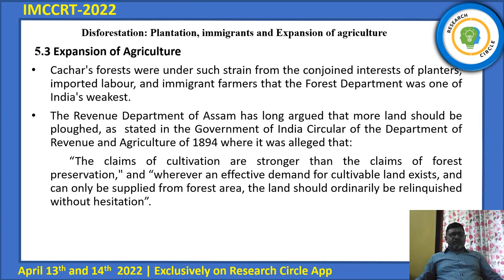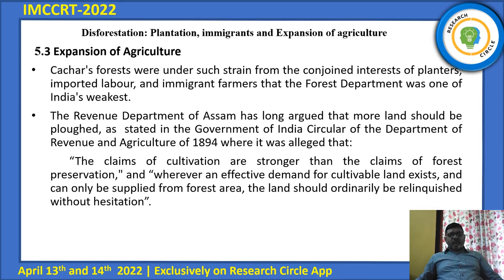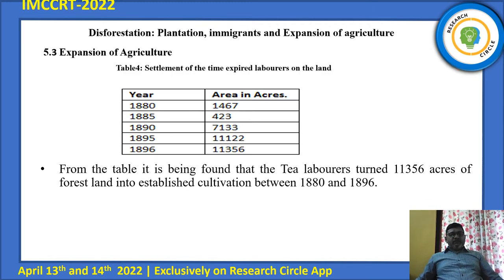With the rise in population, there was a genuine demand for the expansion of agriculture. Looking at the circular issued in 1894 by the Revenue Department of Assam, it clearly shows that the claim of cultivation is stronger than the claim of forest preservation. Wherever an effective demand for cultivable land exists and can only be supplied from forest area, the land should ordinarily be relinquished without hesitation. This chart shows the extension of agriculture from 1880 to 1896.